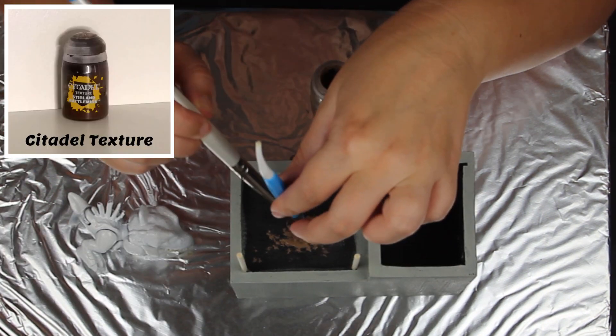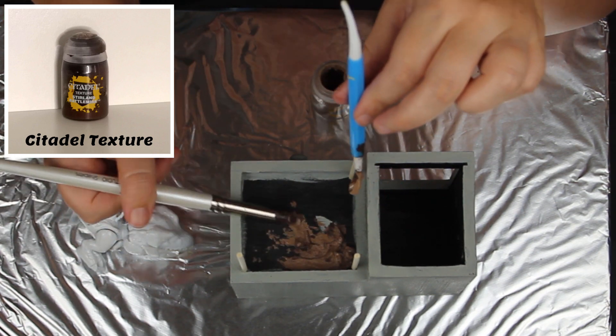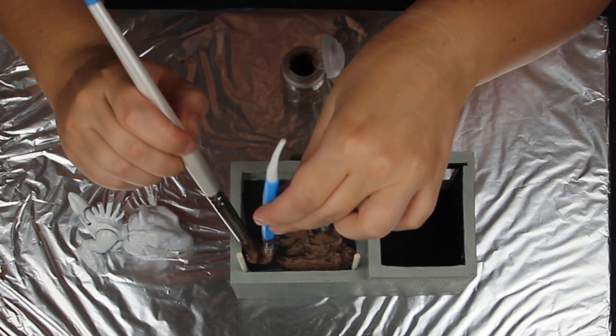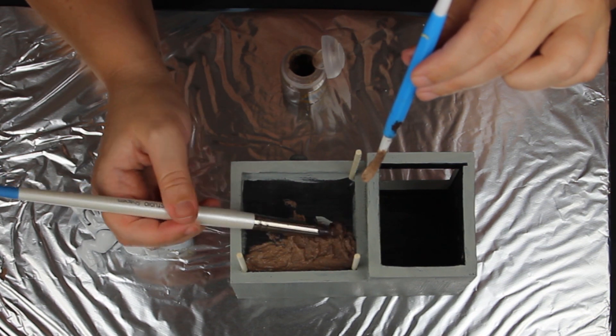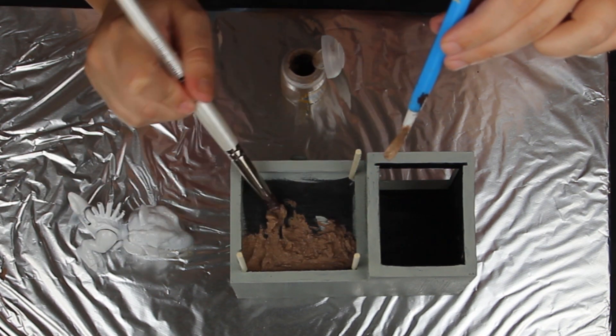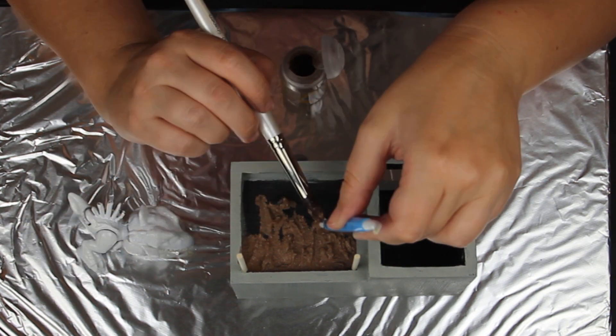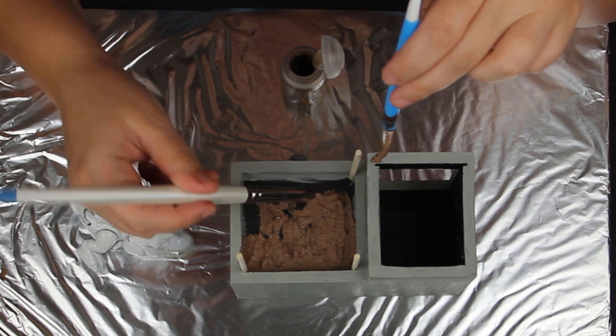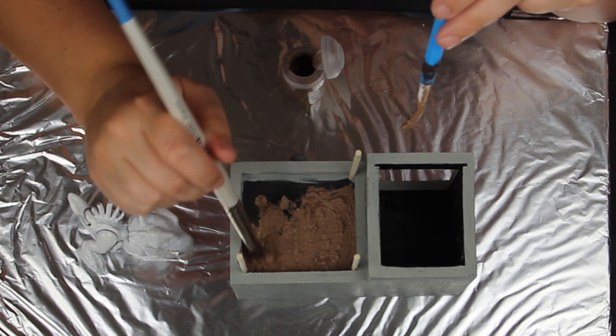So this is a texture paint I'm using now. This is a sand texture paint from Citadel. And I'm using my silicone tool and my sculpting tool just to spread it and flatten it out. So this is just a pencil box I picked up from a junk store, or a $2 shop I guess other countries call them. We call them junk stores here.